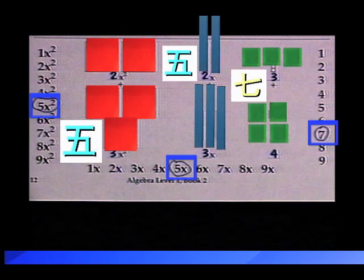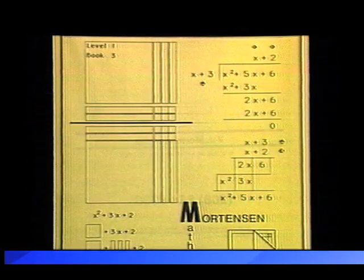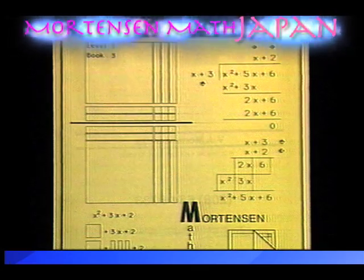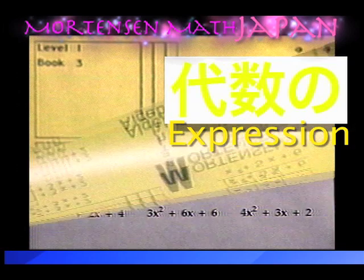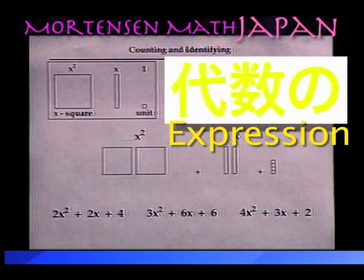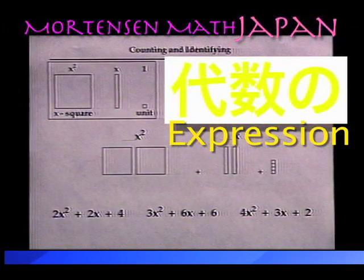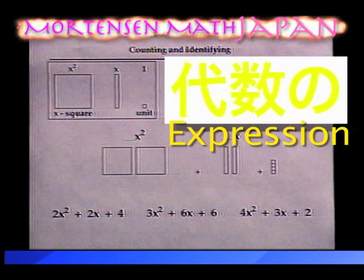Now on to Book 3. In Book 3 of Level 1, we become more familiar with written algebraic expressions. Let's do a few examples. Let's look at the example at the top of page 3. You have already done this, so it will be easy for you.